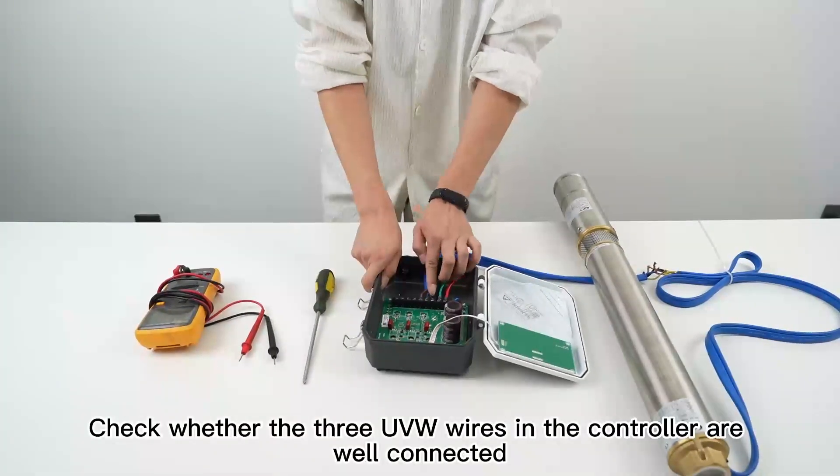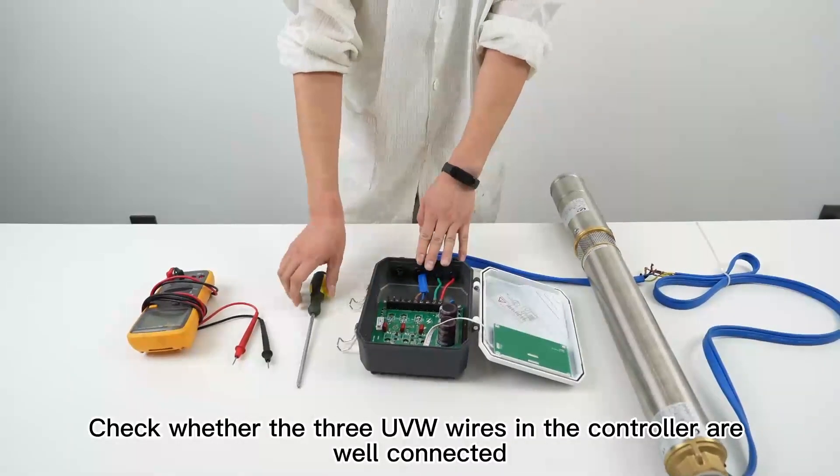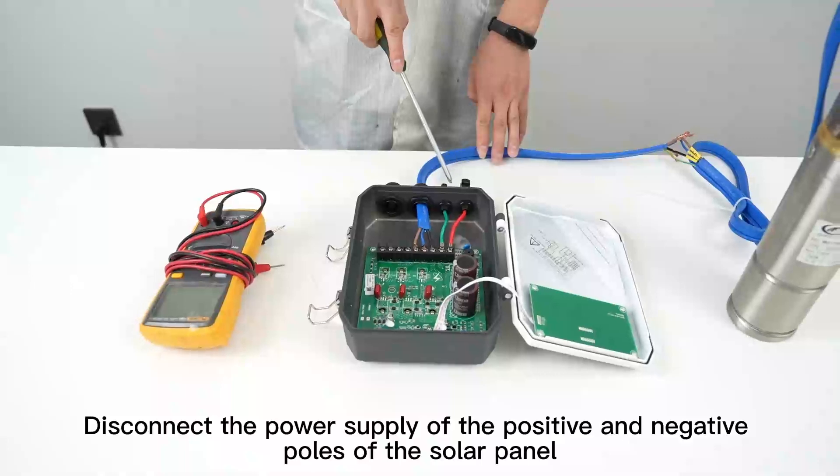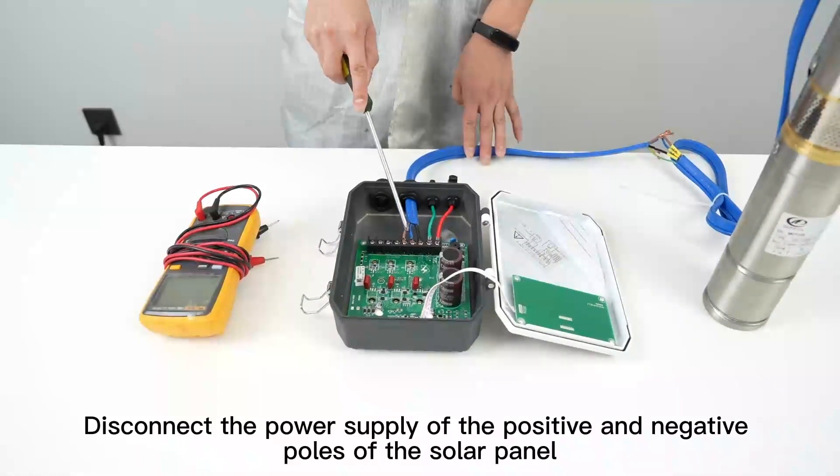Check whether the three UVW wires in the controller are well connected. If the connection is good, disconnect the power supply of the positive and negative poles of the solar panel.